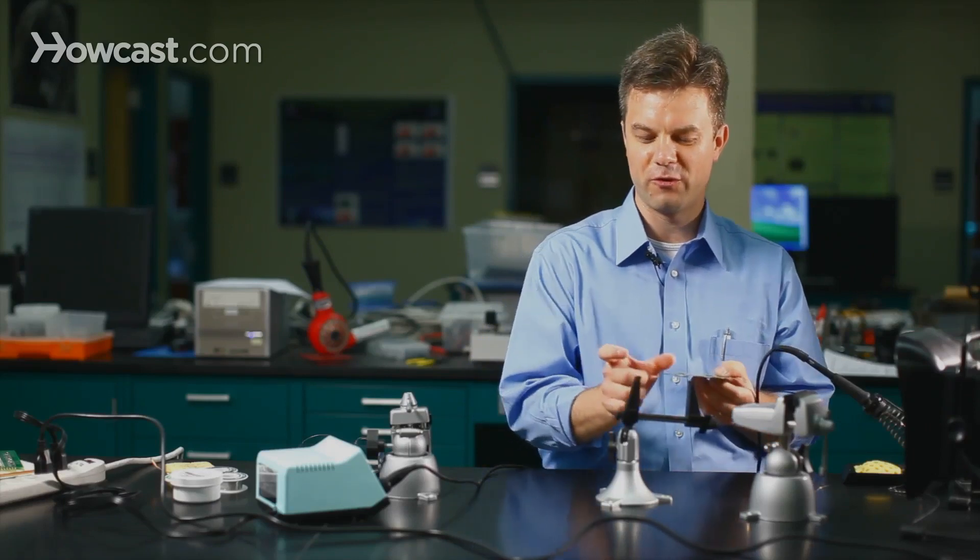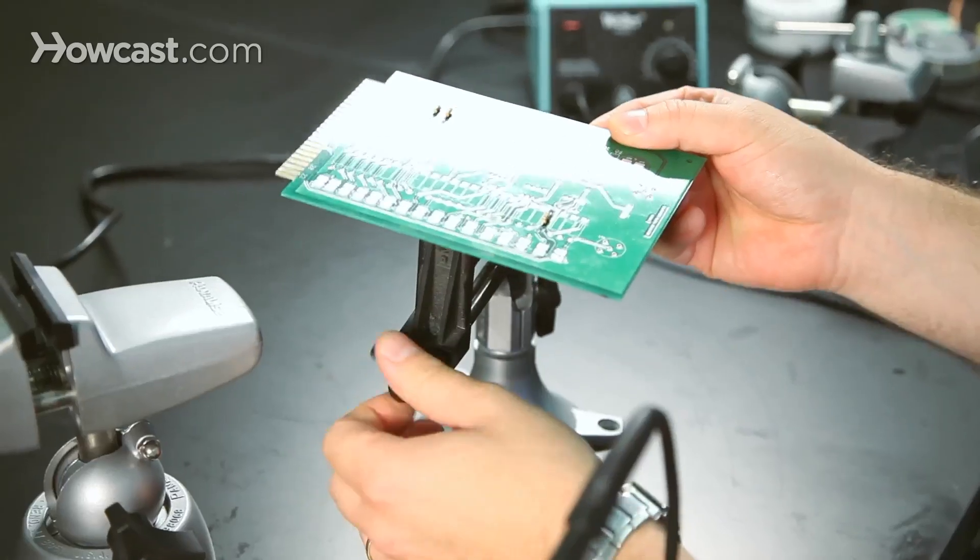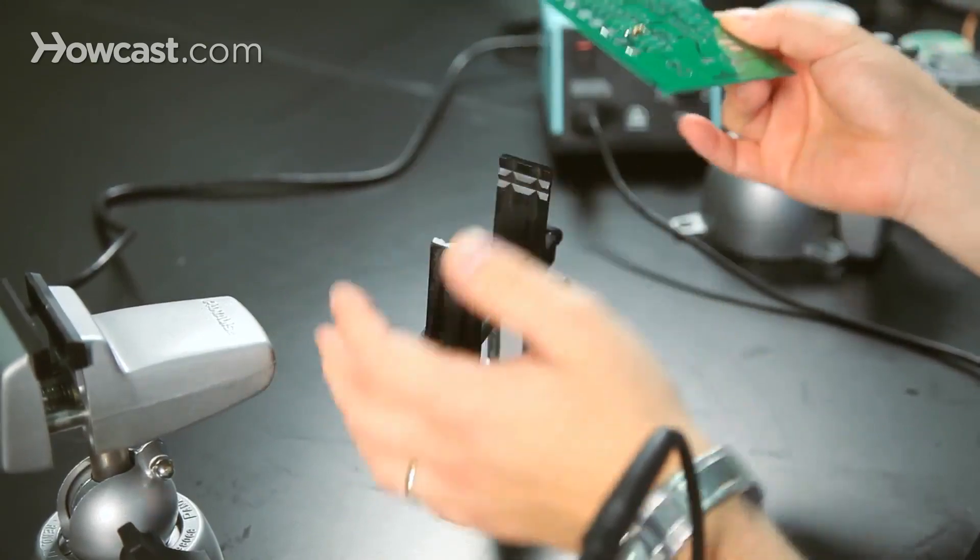But if you're working with something very, very small, it might fit in a vise like this, so it's nice to have something with a wider jaw.